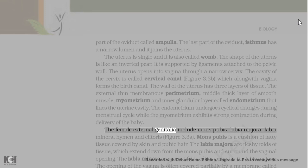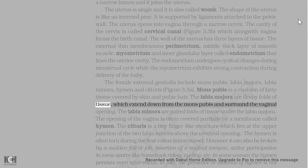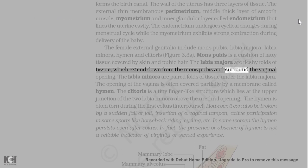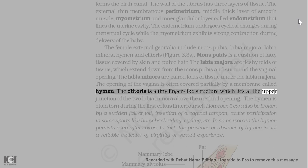The female external genitalia include mons pubis, labia majora, labia minora, hymen, and clitoris. Mons pubis is a cushion of fatty tissue covered by skin and pubic hair. The labia majora are fleshy folds of tissue which extend down from the mons pubis and surround the vaginal opening. The labia minora are paired folds of tissue under the labia majora. The opening of the vagina is often covered partially by a membrane called hymen. The clitoris is a tiny finger-like structure which lies at the upper junction of the two labia minora above the urethral opening.